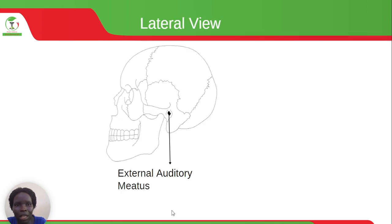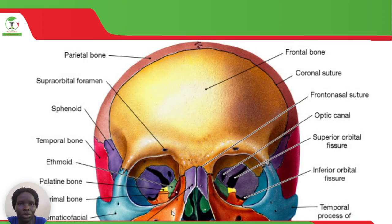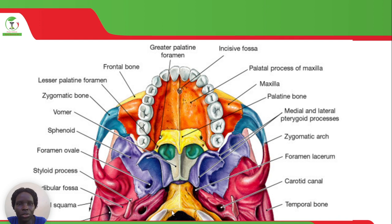We also have the external auditory meatus, which is the opening of the ear. When these bones are put together, that is what you get to see from the frontal view of the skull. This is also the cross-sectional view of the skull — that is how it looks when cut across through the mouth.